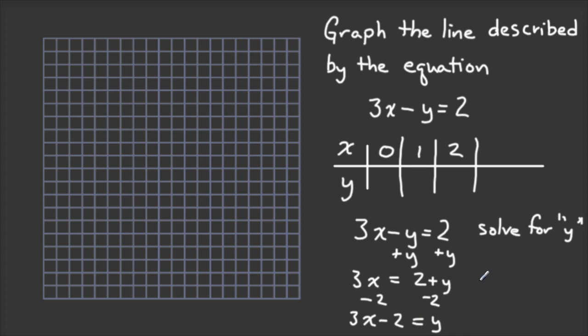And then I'm going to subtract 2 from both sides, and I get 3X minus 2 equals Y. And now I want Y first, so I'll just rewrite that the other way around. Y equals 3X minus 2. And that's the pattern I'm going to use when I substitute values for X, because then I don't have to rearrange it every time.